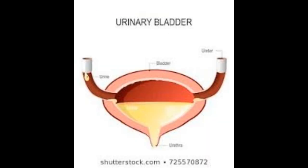The ureters open into a median pear-shaped pouch-like structure called the urinary bladder. The urinary bladder is located in the lower abdominal region just below the stomach. It is a muscular structure which stores urine temporarily until it is sent out from the body. The storage capacity of the urinary bladder is 300 to 800 ml, but it varies from males to females.